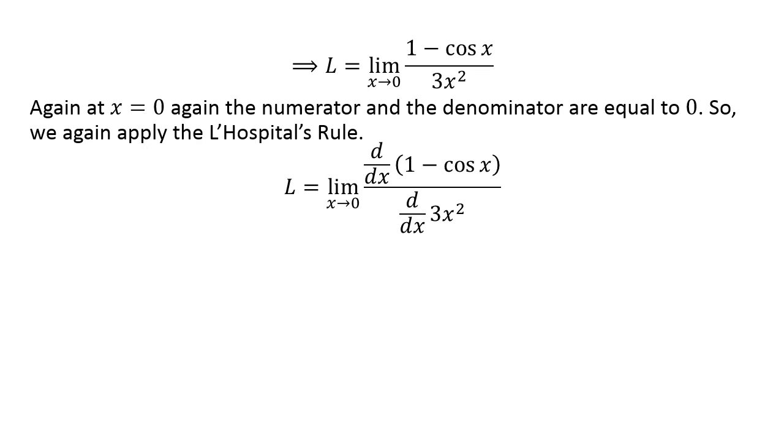Again, at x equals 0, the numerator and denominator are equal to 0, so we again apply L'Hospital's rule. L equals the limit as x approaches 0 of the derivative of sin x over the derivative of 6x, which simplifies to sin x over 6x.